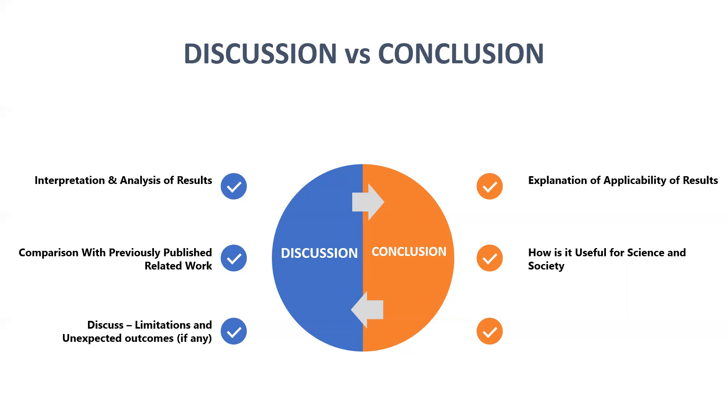Similarly, if any unexpected outcomes or unexpected results have been achieved—it is not guaranteed that we get the same results that have been stated in the objectives. Sometimes we might get some astonishing results, some breakthrough results in our works. Those results are also to be discussed in the discussion part of the research work.